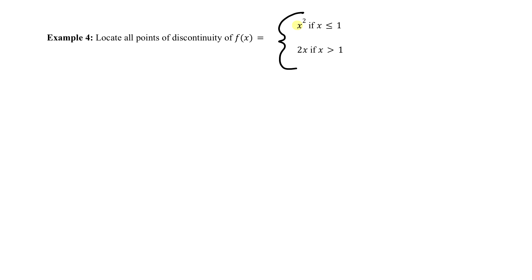We can use our continuity properties to talk about continuity of piecewise defined functions. We are going to locate all points of discontinuity for f(x), which is defined as x squared if x is less than or equal to 1, and 2x if x is greater than 1.